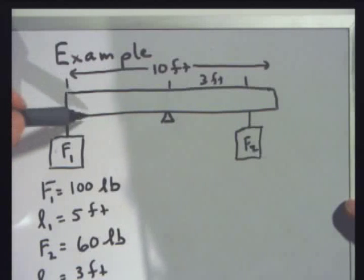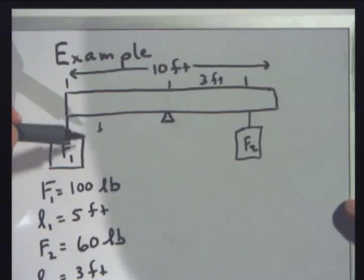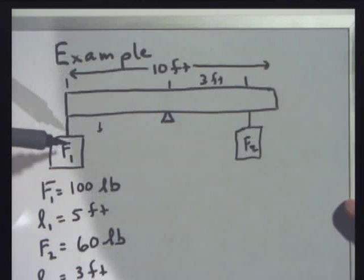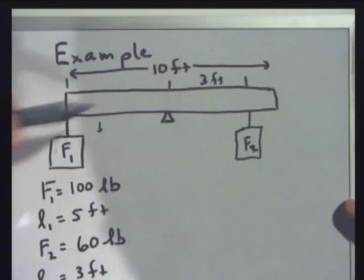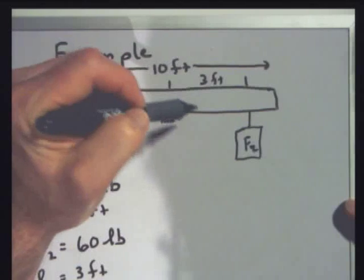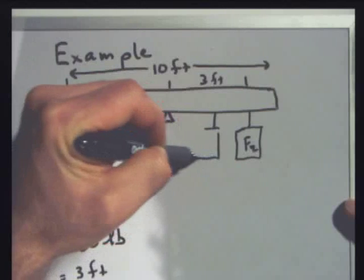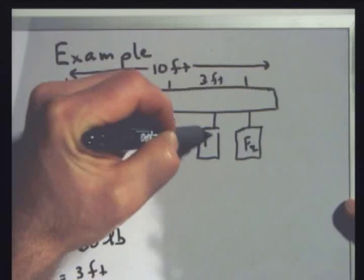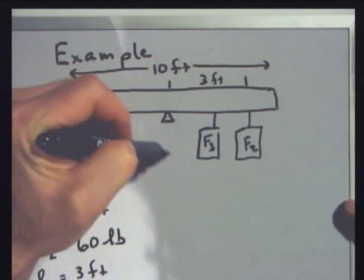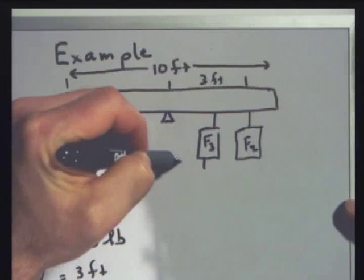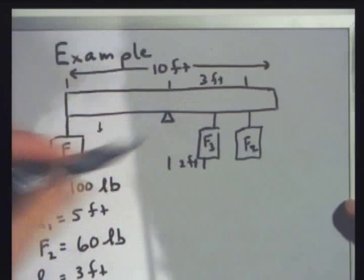Now, this side is going to go down unless I balance it, right? I mean, you've got 100 pounds, and it's further out. It's going to have a bigger torque. So I need to balance it here. So let's put something at two feet. We'll call it F3. And it's at a distance of two feet.